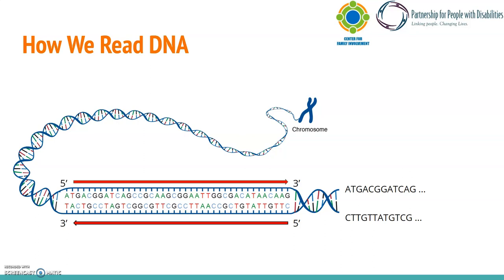The important part is just knowing the difference between the two. Think of the 5' end as the start of a sentence and the 3' end as the end of a sentence. We always read in a 5' to 3' direction. The red arrows in this image show that direction, and the bases on the right of the slide show the order that they would be in if we were to read this gene. So, the top strand in this image would read ATG, GAC, GGA, and so on.